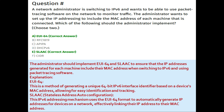Next question: a network administrator is switching to IPv6 and wants to use packet tracing software to monitor traffic. The administrator wants to set up IP addressing to include the MAC address of each connected machine. Which of the following should the administrator implement? Choose two: Option A: EUI-64, Option B: RFC 1918, Option C: APIPA, Option D: DSCP version 6, Option E: SLAAC, Option F: CIDR. The correct answers are A and E.